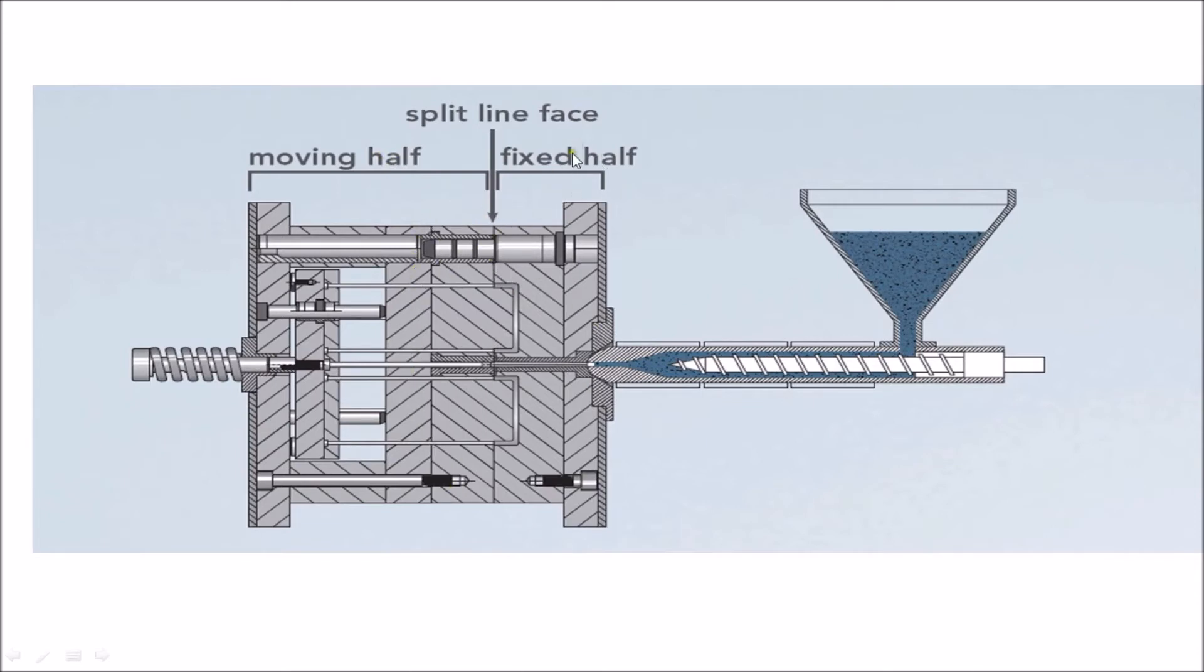core side, and the fixed half is also known as cavity side. This is the parting line, which is written here as split line. This narrow space could be from 0.8 to 7mm depending on the process.